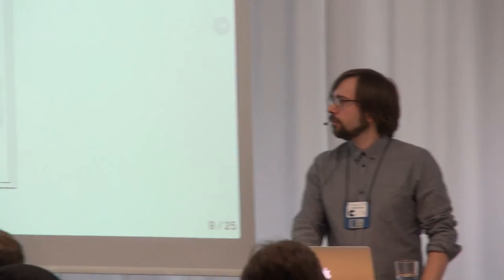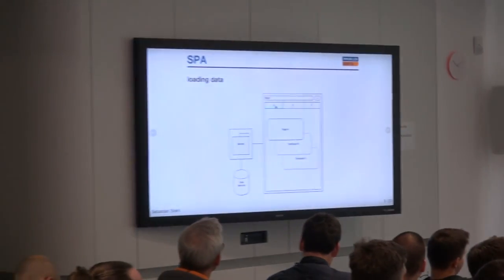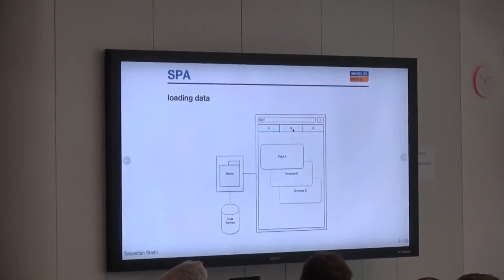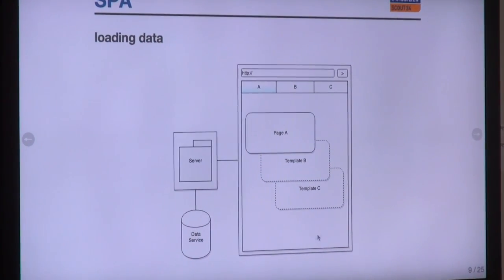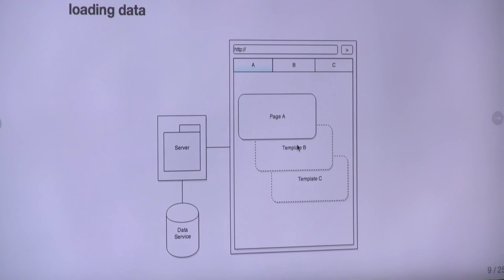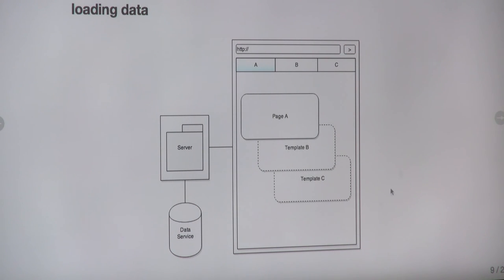Here's an overview of how data loading can work. If you have page A loaded in your browser and you want to go to page B, you don't need to reload the header, footer, or outer information. You only need to fill the template of page B. Therefore, you only go to the server and the data service to get the information needed for that template, not the whole page.